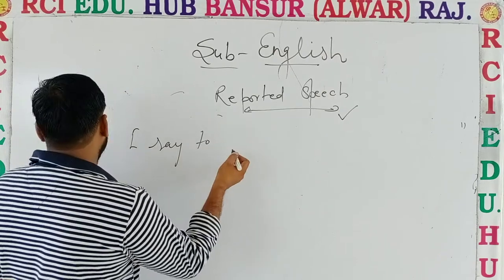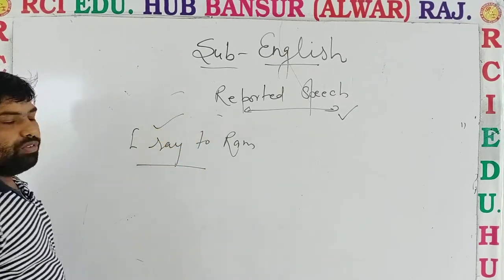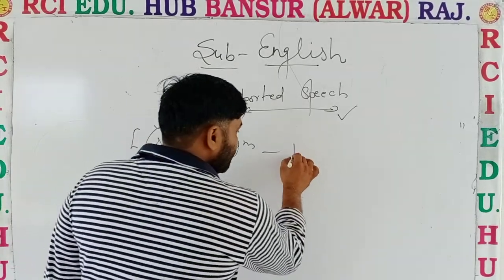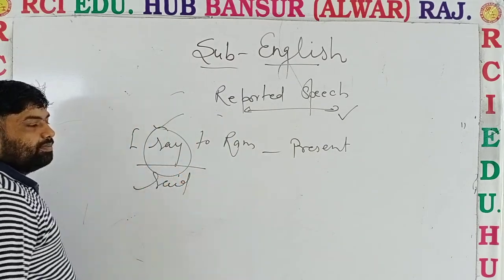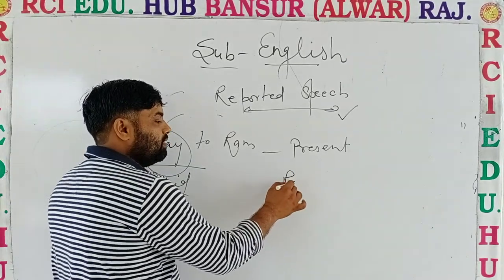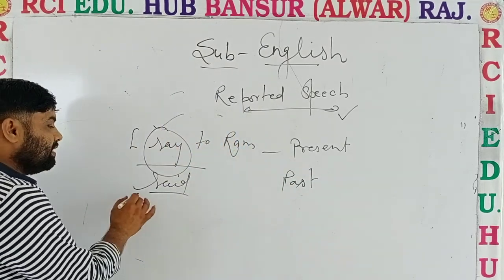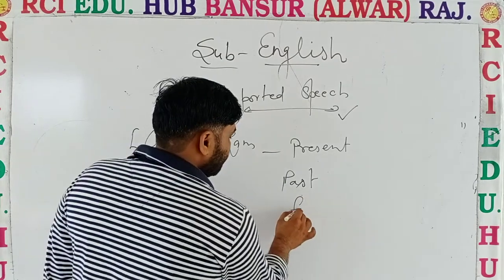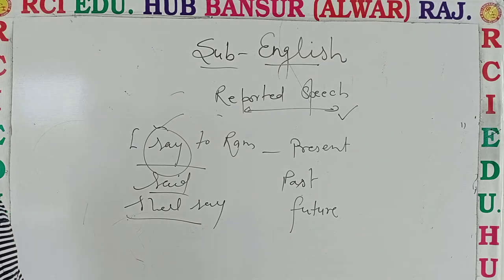Let me ask: 'I say to Ram' — which tense is it? 'Say' is first form, so it is present tense. If it is written 'I said to Ram,' we recognize second form, so it is past tense. In the same way, if it is written 'I shall say,' then it is future tense.